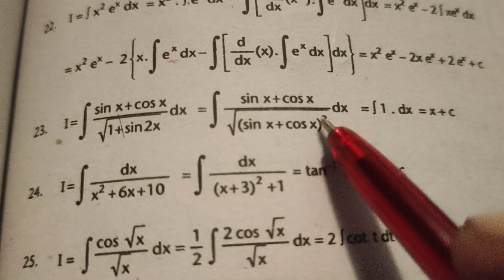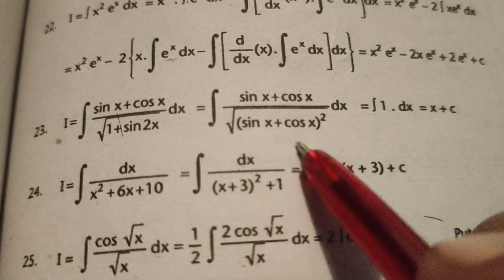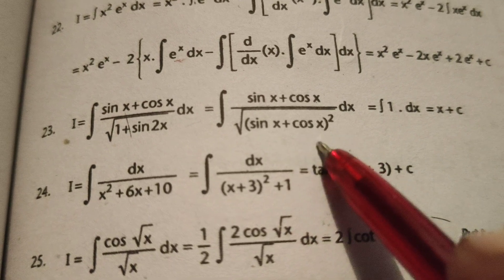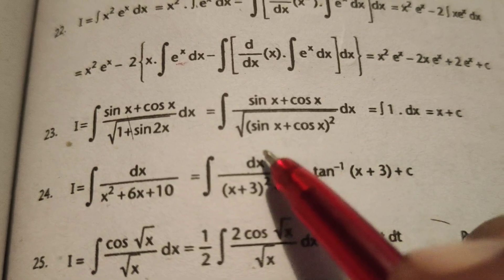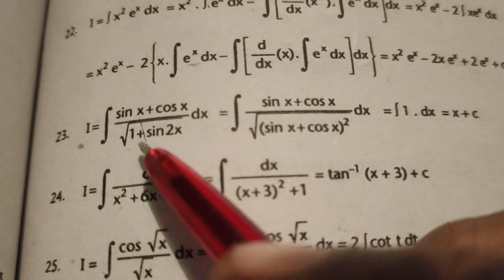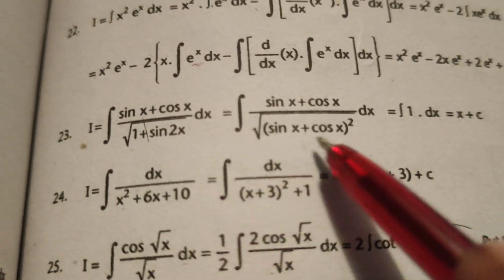Why? Because when we expand (sin x + cos x)², we get sin²x + cos²x + 2sin x cos x. Here, sin²x + cos²x equals 1, and 2sin x cos x equals sin 2x.